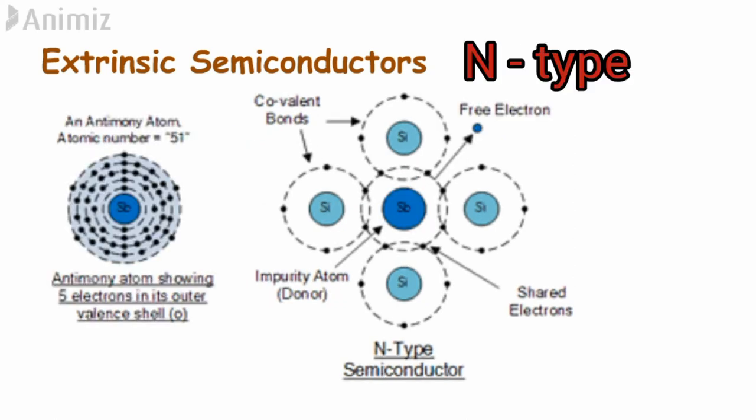So now let's move to our second type extrinsic semiconductor. Here the pentavalent elements or we call group five elements are doped to an intrinsic semiconductor such as silicon. So let's consider antimony as an example. It has five valence electrons in its outermost shell. So here the antimony acquires four electrons from the nearby silicon atoms to get its outermost shell as eight. But silicon has only four electrons in its outermost shell.